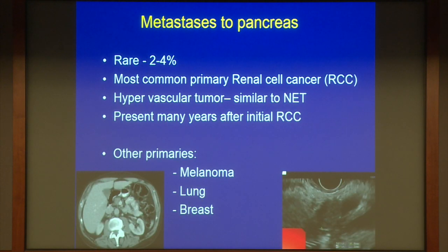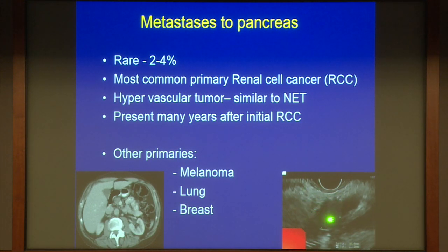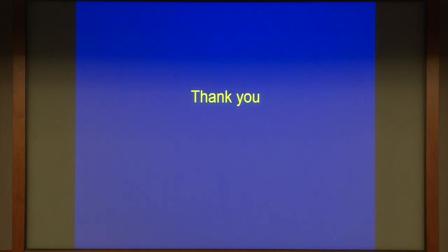Metastasis to the pancreas is quite rare, but can happen — mostly from vascular lesions like renal cell carcinoma, sometimes from melanoma, lung, and breast. It's hard to differentiate primary versus metastasis by imaging appearance alone; history is very helpful, such as a history of nephrectomy. A case from our melanoma program showed a hypoechoic lesion in the pancreas with obstruction — confirmed as melanoma metastasis. Thank you so much for your attention.